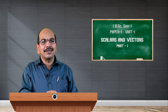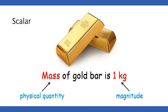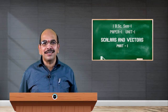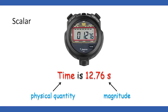Similarly, let us look at another example: mass of a gold bar. Mass is also a scalar quantity because it has only magnitude but no direction. Here mass is the physical quantity, 1 is its magnitude and kg is its unit. Similarly, you have time. Time can be taken as a scalar physical quantity. Here the time shown is 12.76 seconds — second is the unit and 12.76 is the magnitude.